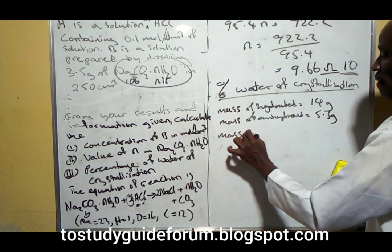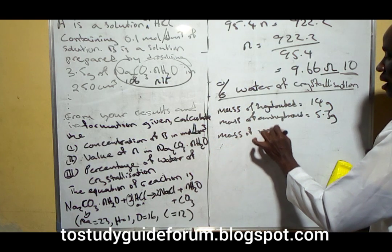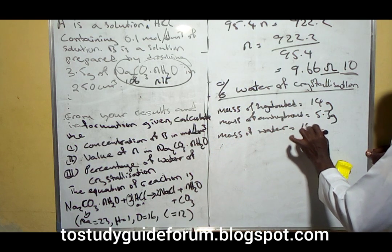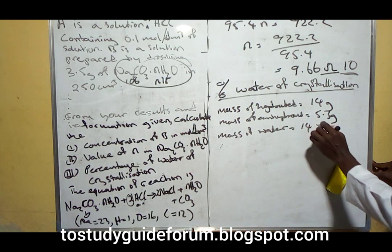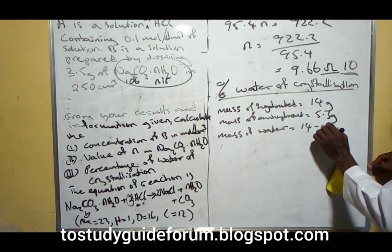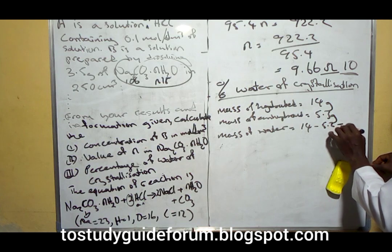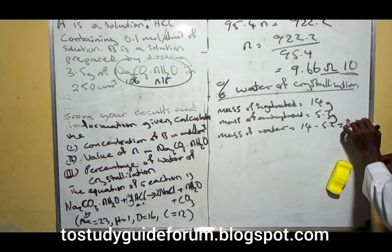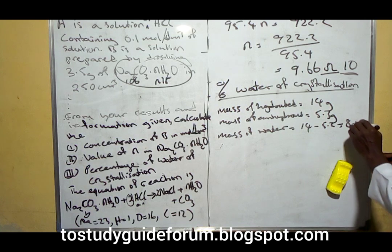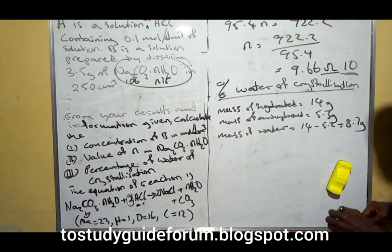Mass of water will then be mass of hydrated salt minus anhydrous salt. That gives us 8.7 grams.